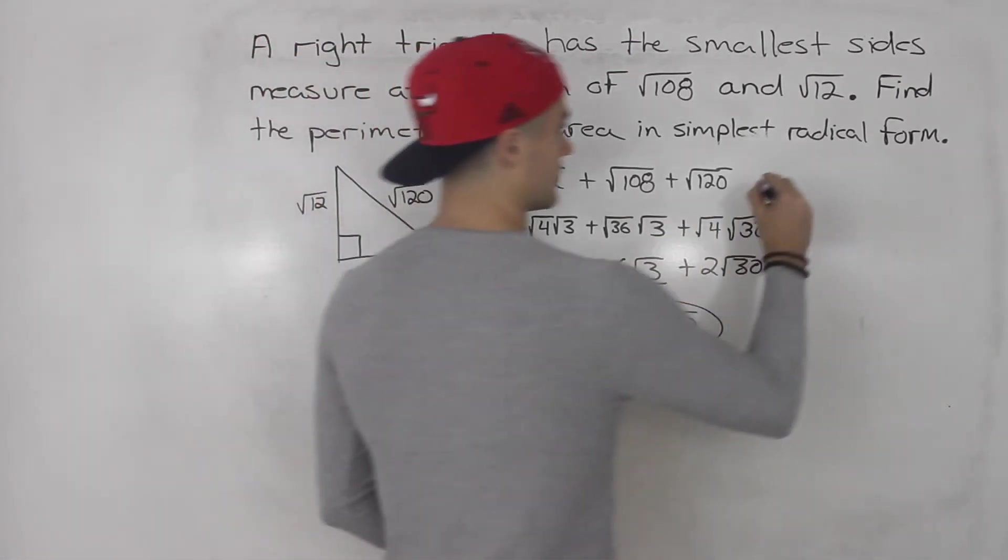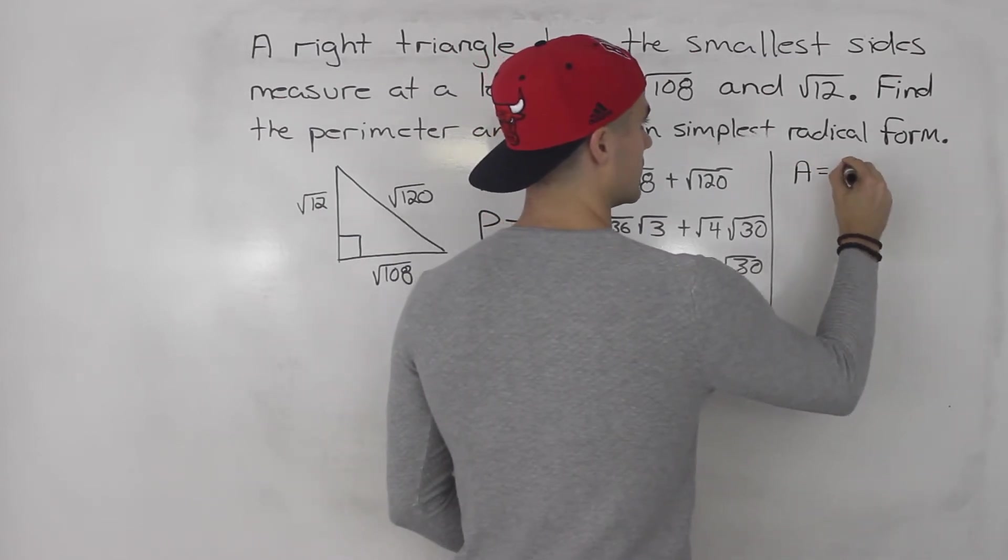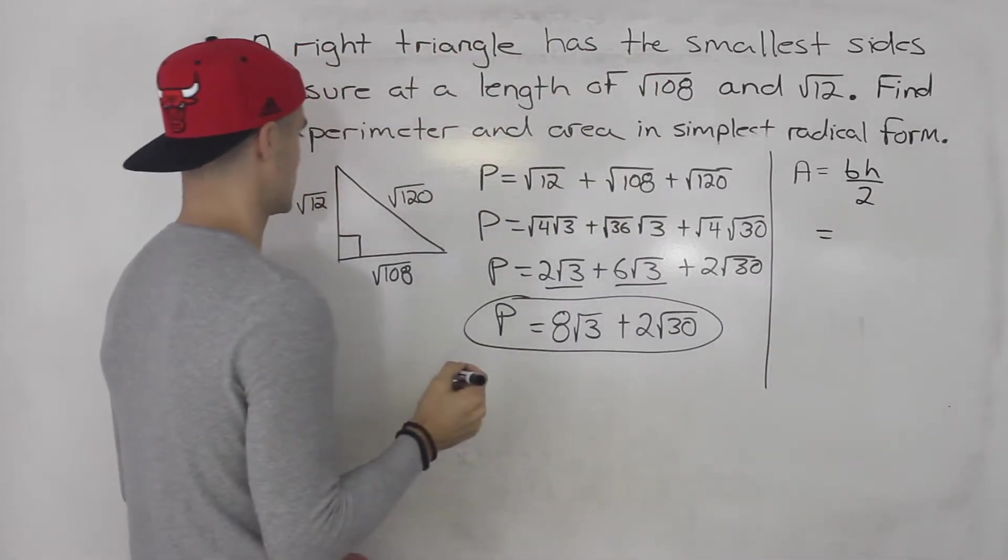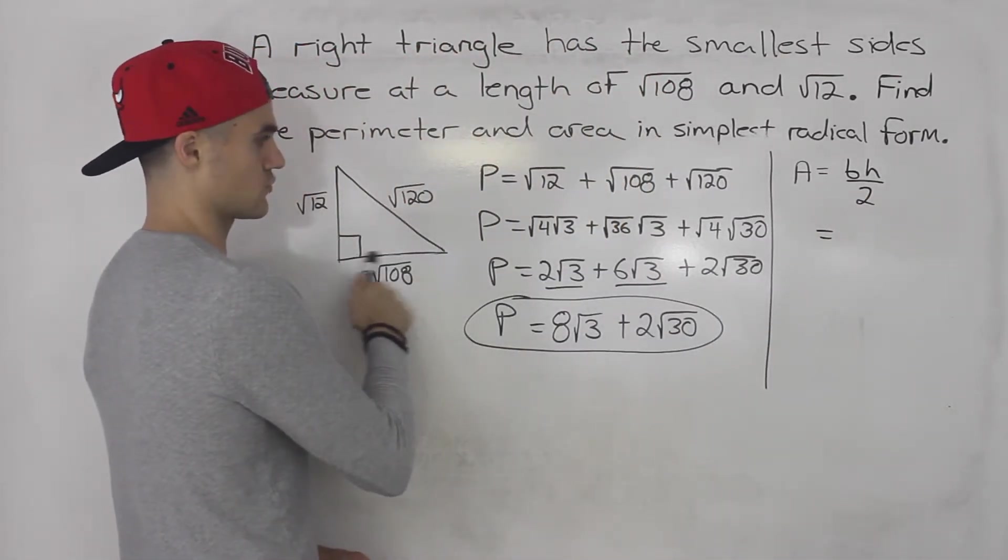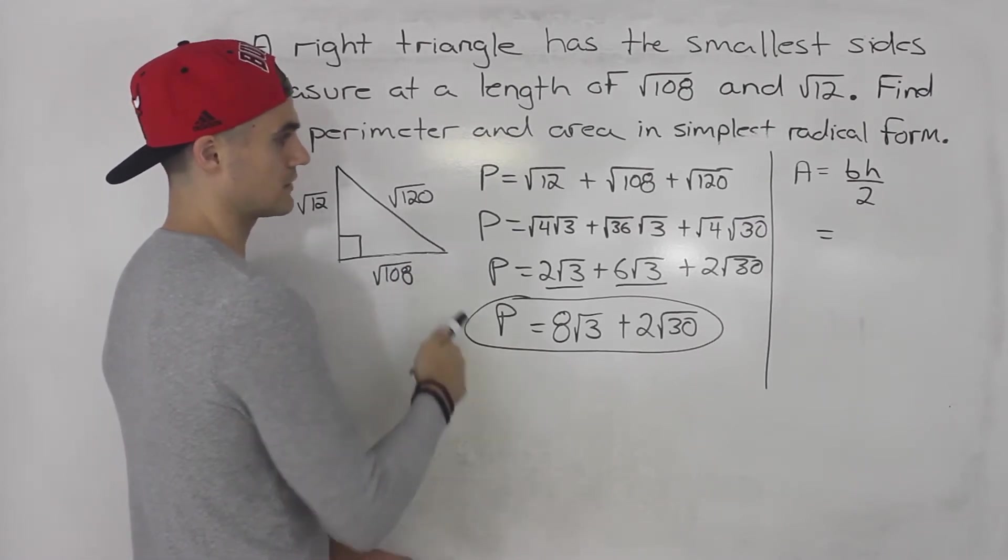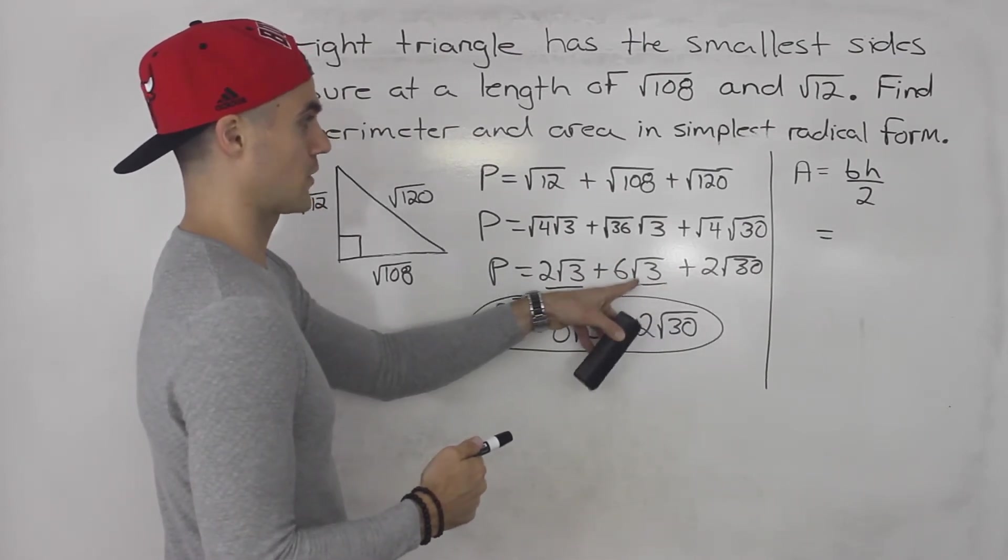What about the area? Well, we know the area is equal to base times height divided by 2. Well, what's the base in this case? The base is this root 108. But instead of putting root 108, let's just put the simplest radical form for root 108. So root 108, we already broke down into 6 root 3 here.